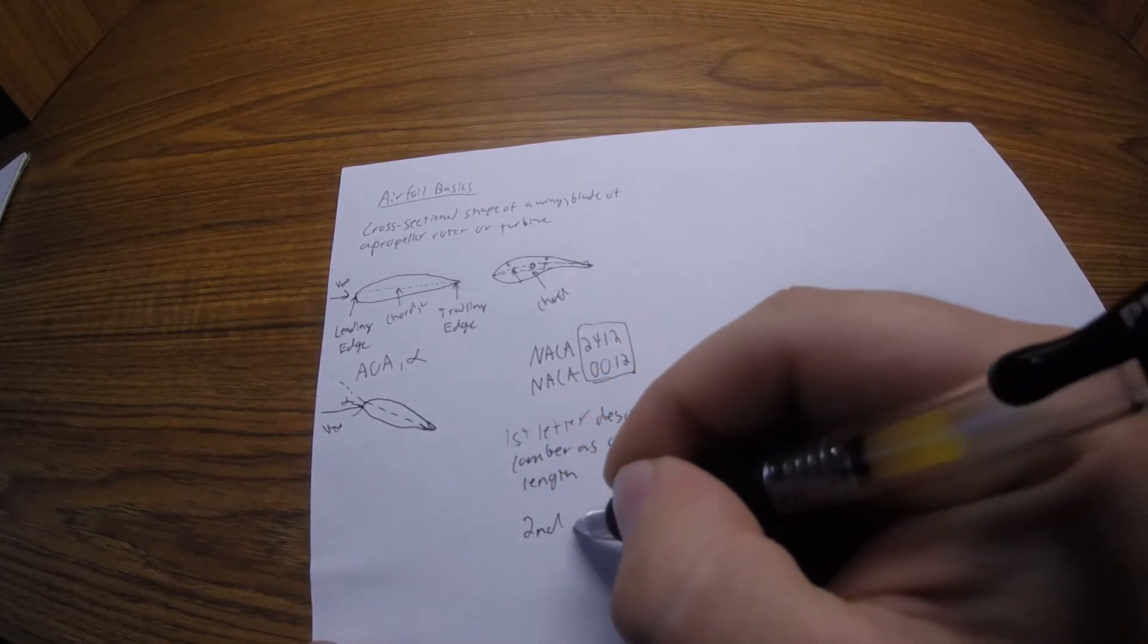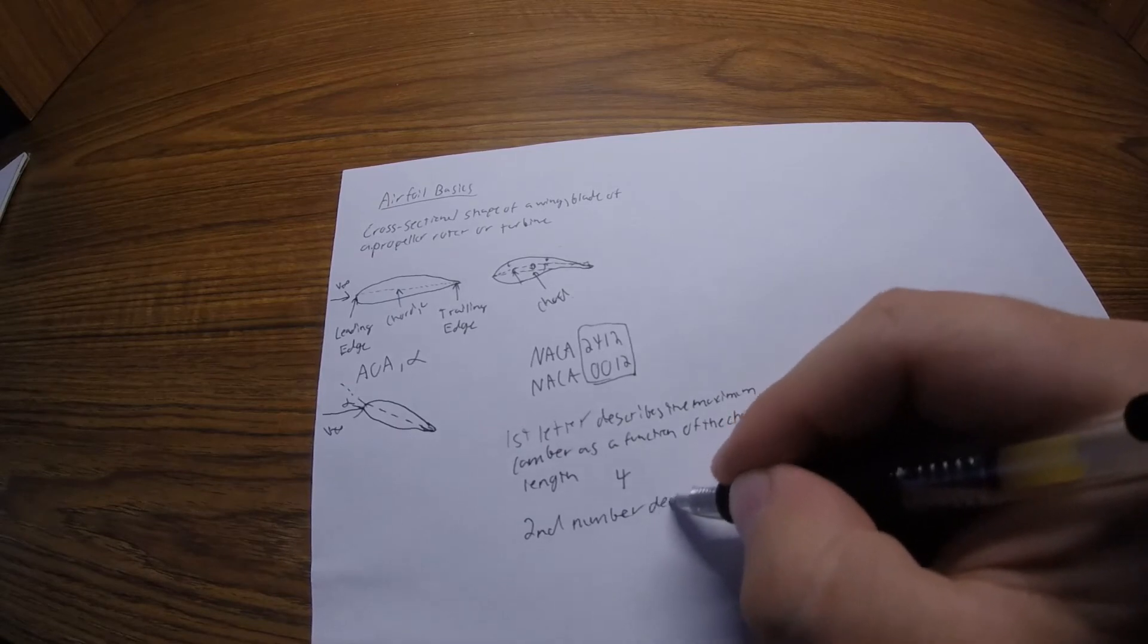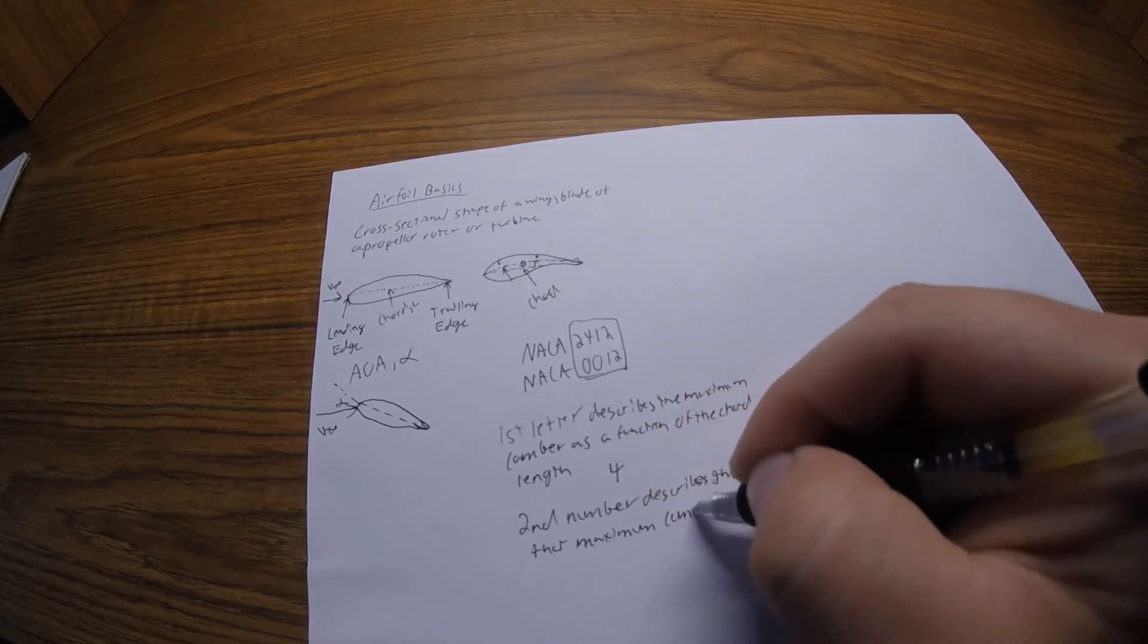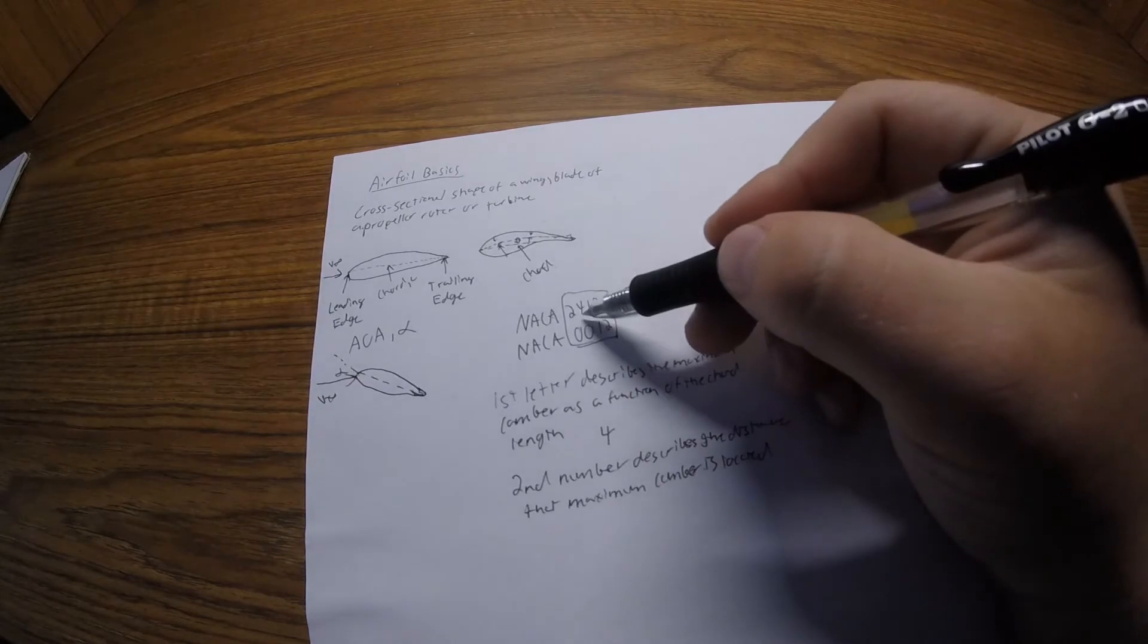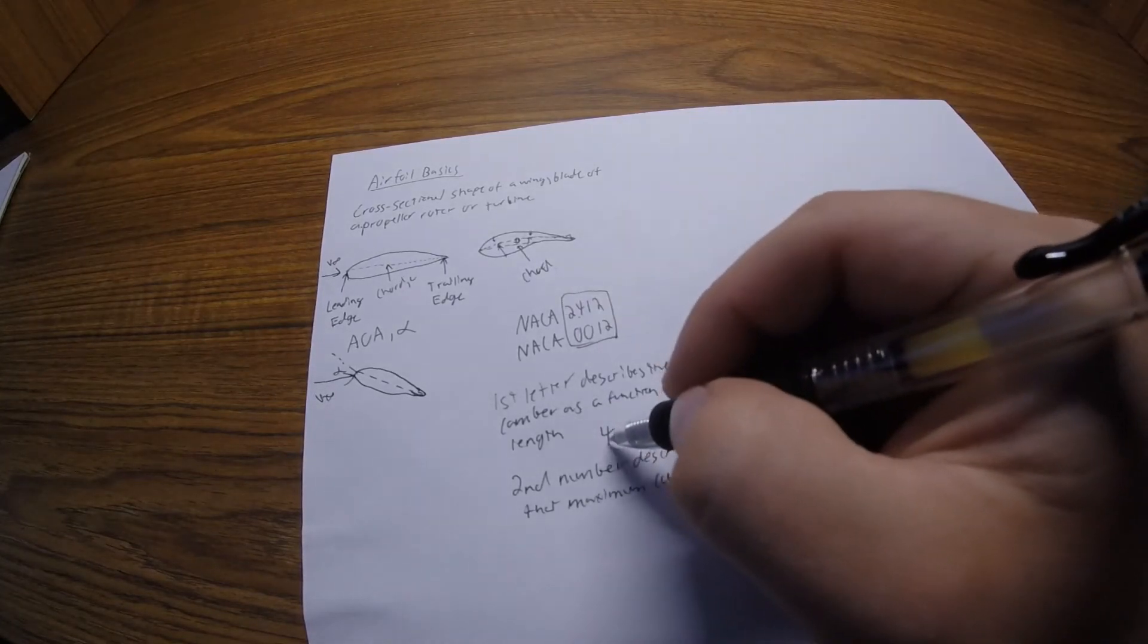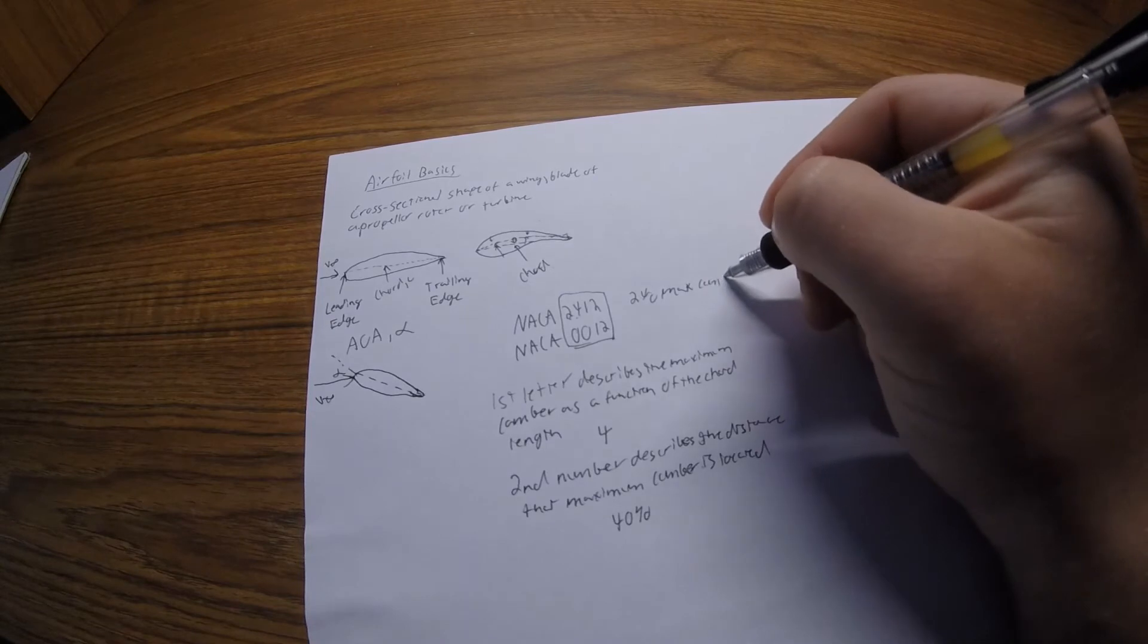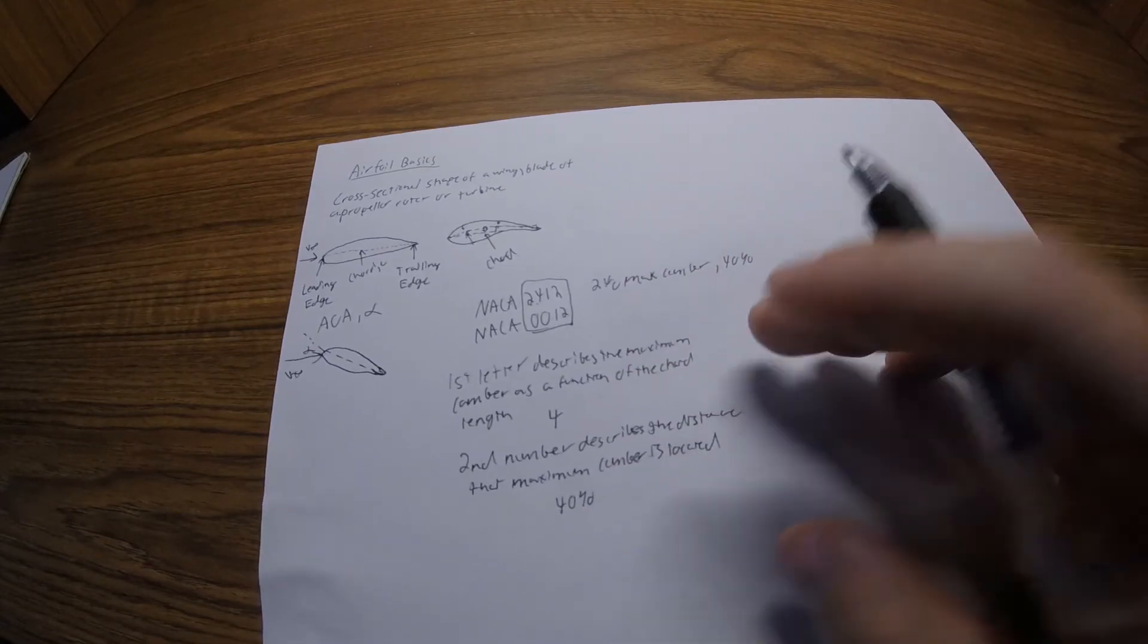Then the second number describes the distance that maximum camber is located, or where the maximum camber is located. If it's a 4, so the first letter is 4 percent, if the second letter is a 4, that's 40 percent. So if it's a 2, it's supposed to be 2 percent max camber located at 40 percent from the leading edge along the chord line.